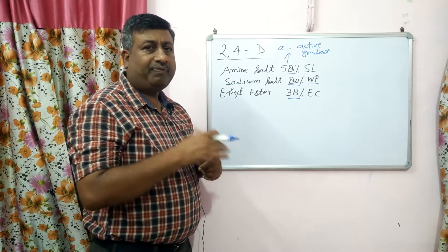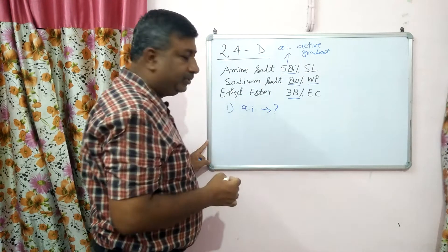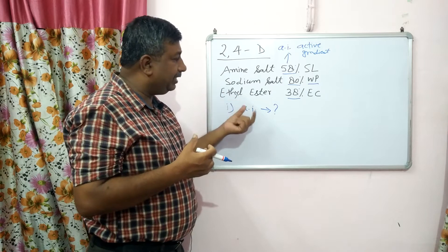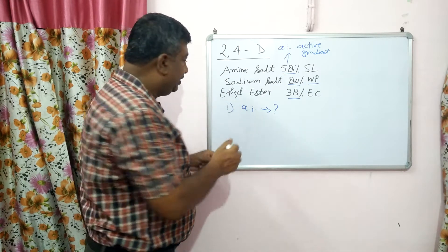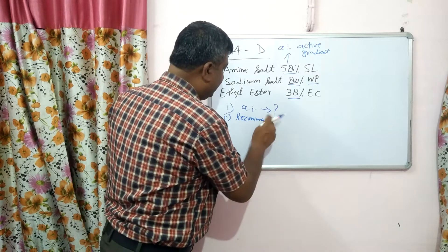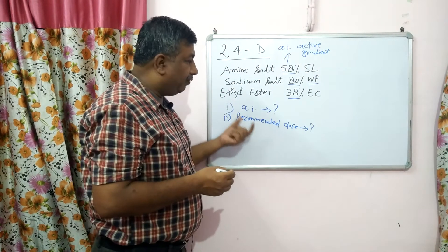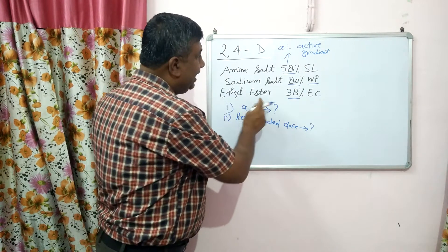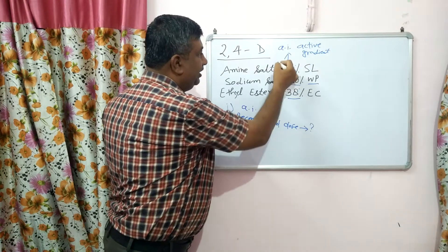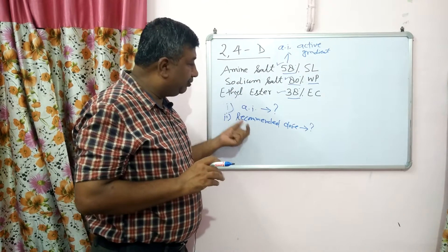To calculate the dose of any herbicide, we require two parameters. Number one: what is the AI — the active ingredient — which is mentioned on the herbicide packet. Number two: what is the recommended dose for the application. The recommended dose is different for different crops — for wheat it is different, for maize and sugarcane it is different. But the AI is fixed: for amine salt it is 58%, for sodium salt it is 80%, and for ethyl ester the AI is 38%.